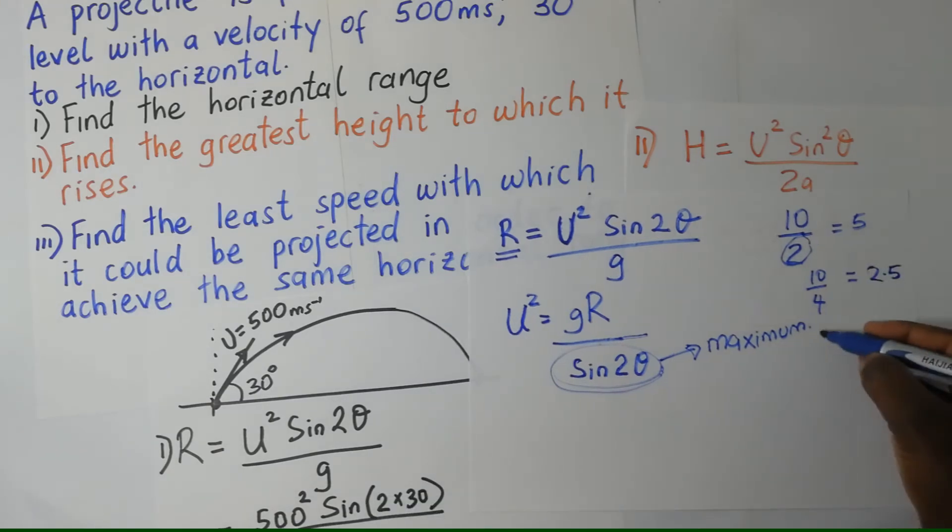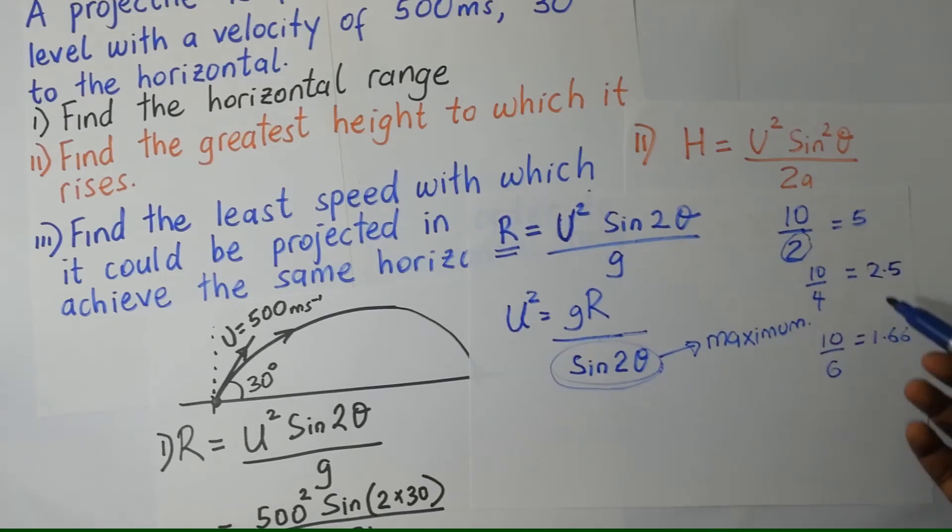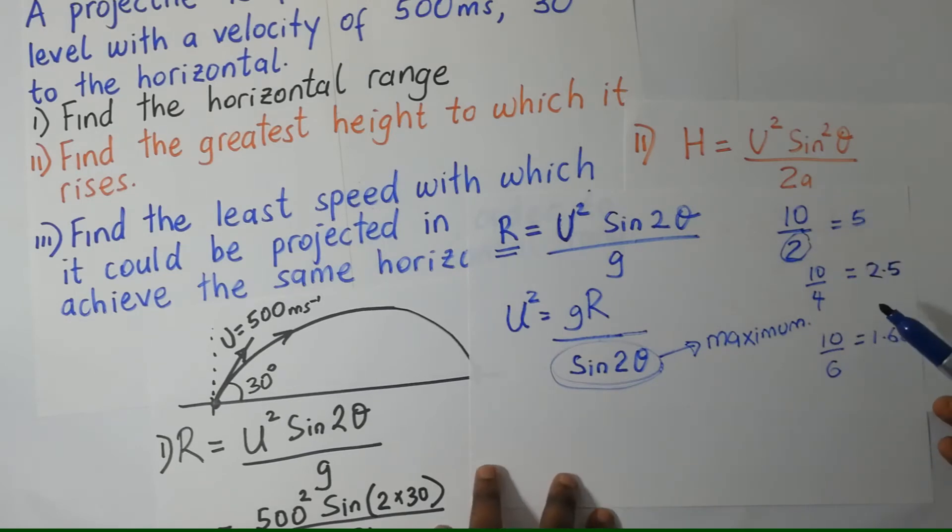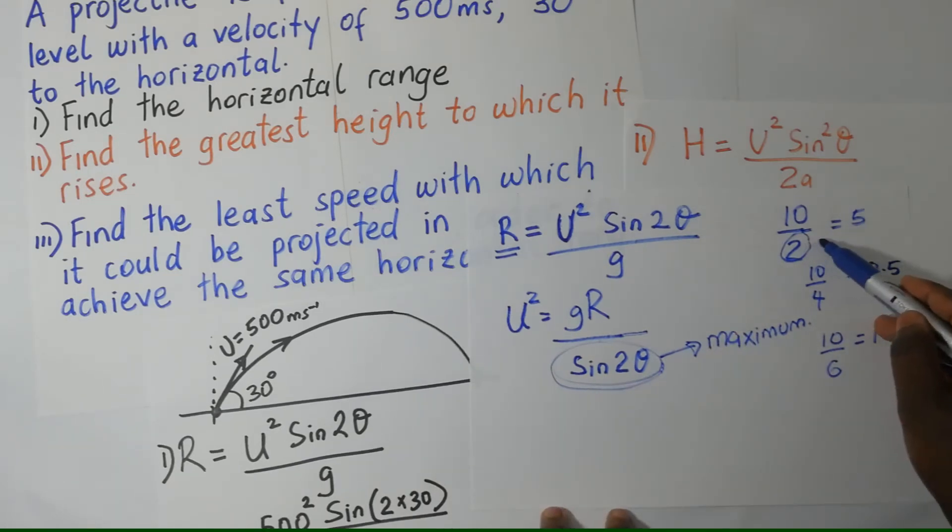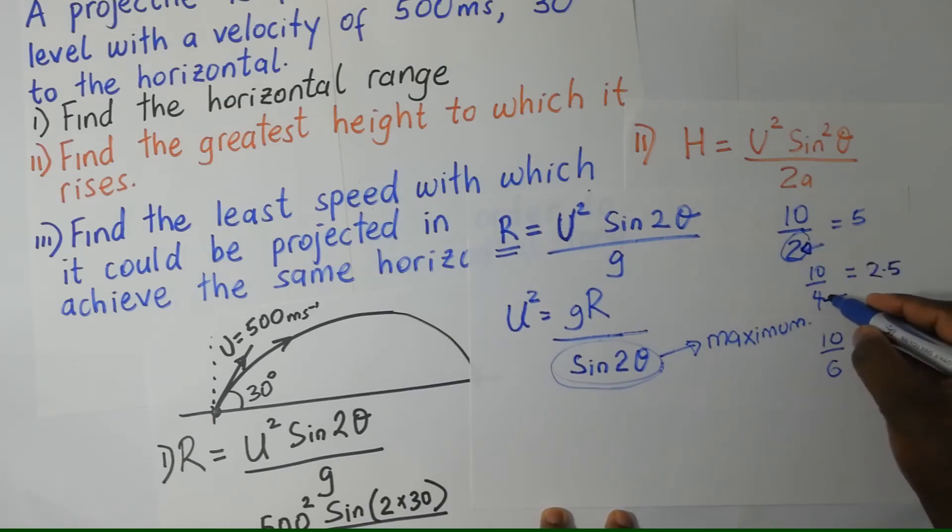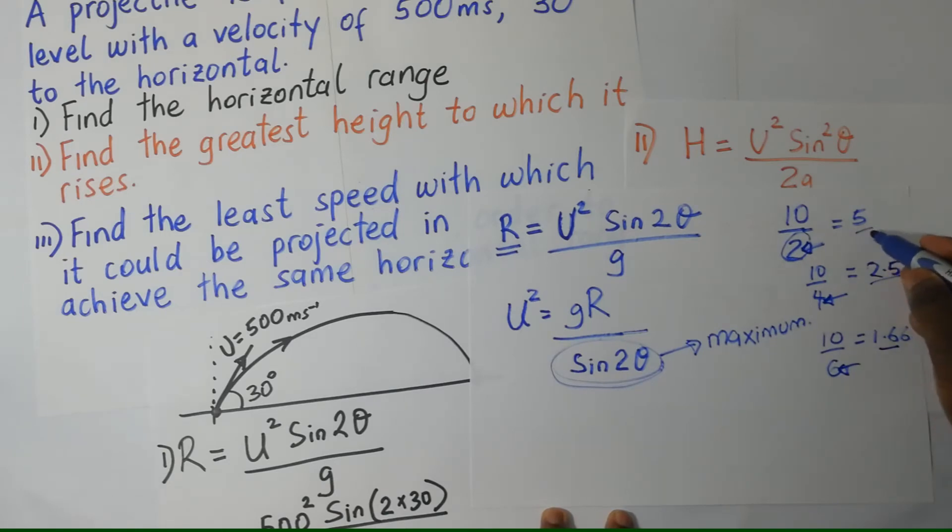If I continue and say what is 10 over 6, I'm going to end up with 1.66. From this simple illustration, as I keep increasing the denominator, my answer here becomes smaller and smaller. The bigger the denominator, the smaller the answer I get.